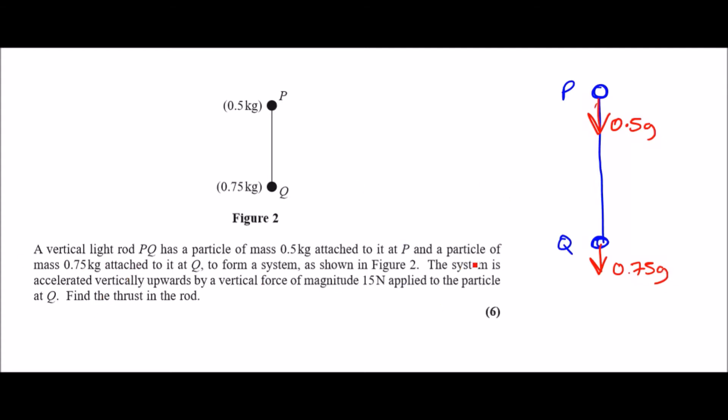And at Q there is a mass of 0.75 kg, so 0.75g. We also know that the system is accelerated vertically upwards, so let's do the acceleration sign pointing upwards. And there's a force, a vertical force of 15 newtons applied at Q. And of course we just always work in newtons.